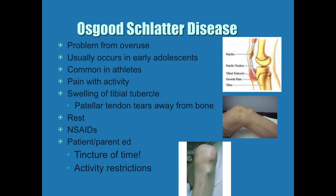We're going to start with Osgood Schlatter's disease. This is a problem that results from overuse, so we're going to see it in our adolescent population — maybe even school age — where they started in things like soccer or football at a very young age. It's very common in athletes, and what they complain about is pain when they're active, especially running.